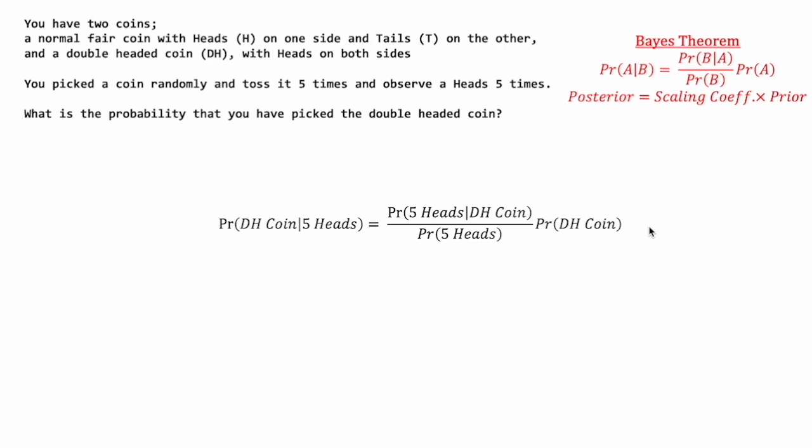The probability of getting the double-headed coin, given that we have obtained five heads on our flips, is equal to the probability of getting five heads on our flips conditioned on using a double-headed coin, divided by the probability of getting five heads in general. This fraction is then multiplied by our prior: the probability of getting the double-headed coin.